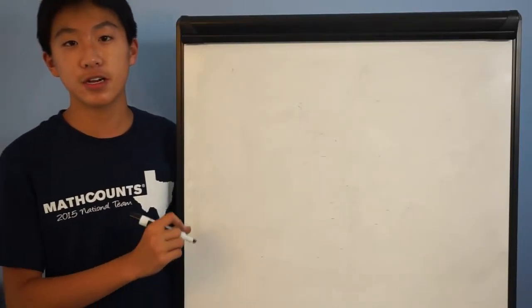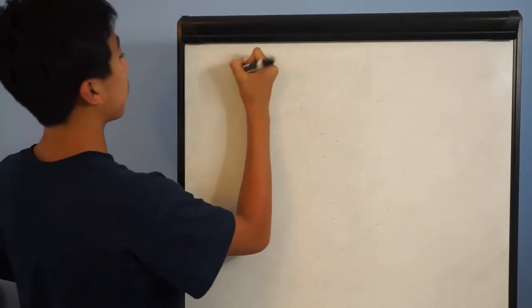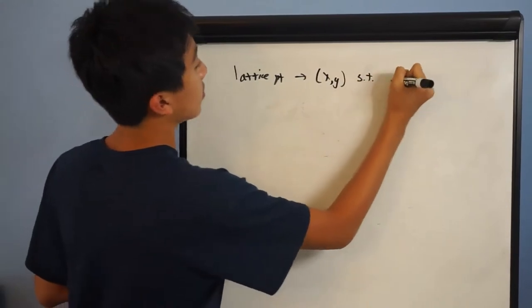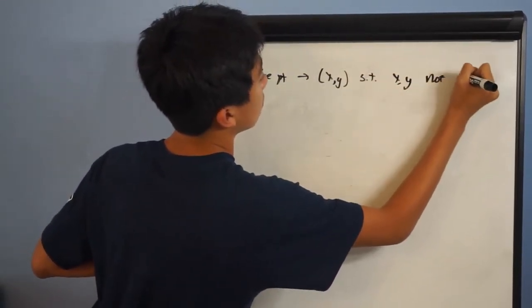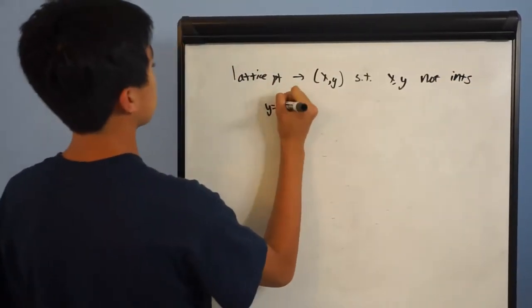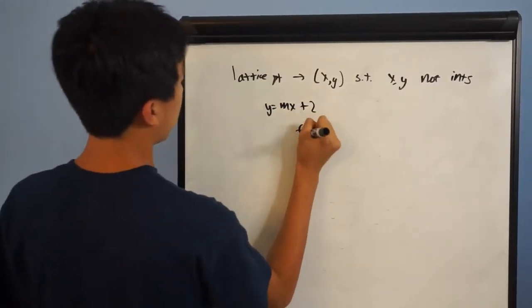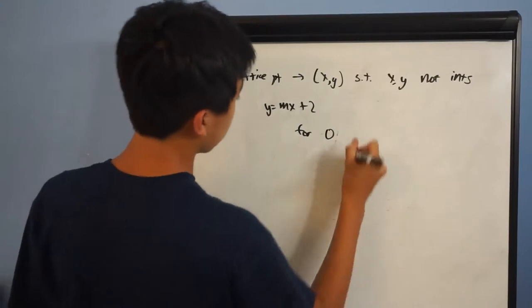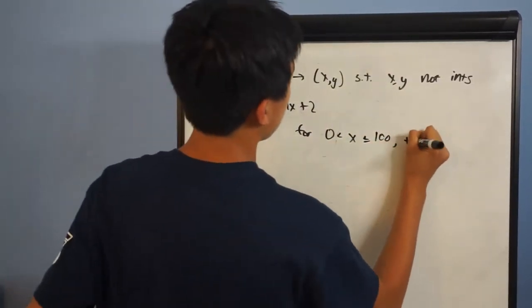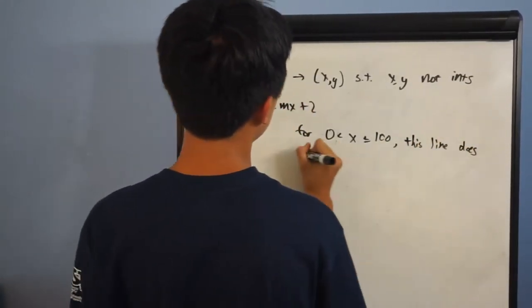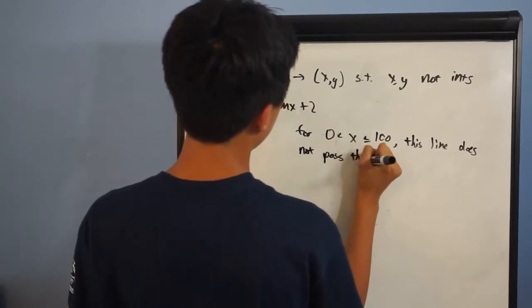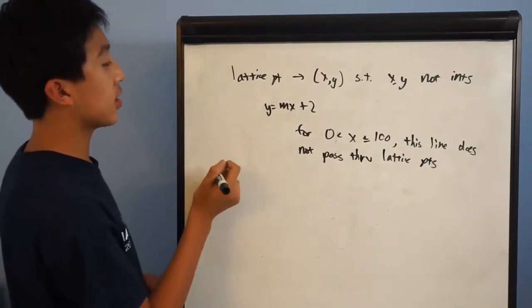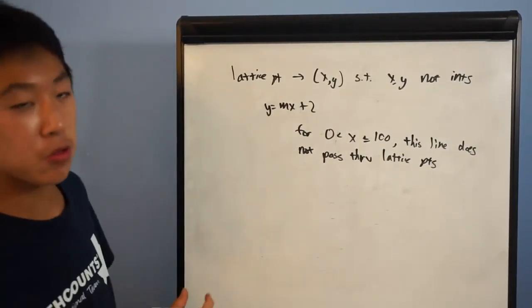For this problem, there are several solutions out there — this is my solution. So the problem gives us the definition for a lattice point: a lattice point is a point (x, y) such that x and y are integers. We have the line y equals mx plus 2, and we're given that for x greater than 0 and less than or equal to 100, this line does not pass through any lattice points — meaning it never passes through any point where both coordinates are integers.